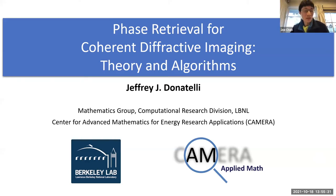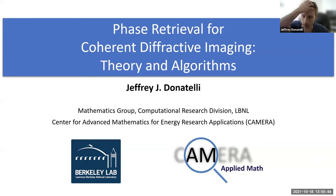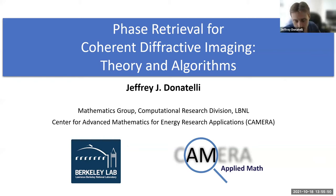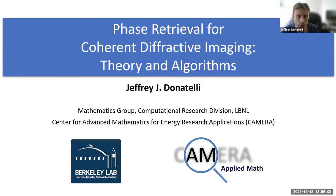Jeff is introduced as the coolest mathematician the host knows. Jeff Donatelli introduces himself as a research scientist in the math group at Lawrence Berkeley Lab and the Center for Advanced Mathematics for Energy Research Applications (CAMERA). He announces he will talk about phase retrieval for coherent diffractive imaging, covering theory and algorithms, and invites questions throughout the talk.